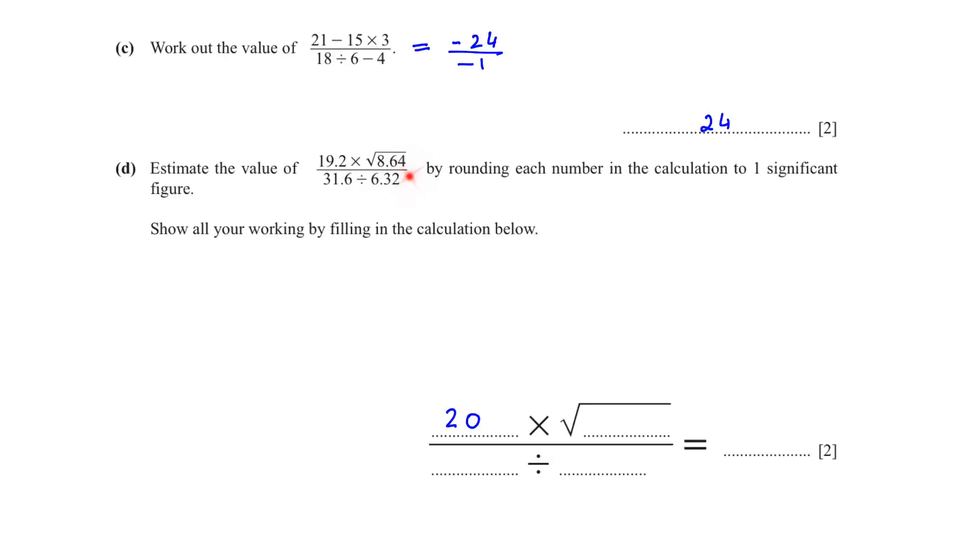Square root 8.64 - if I round this, because 6 is bigger than 5, if you have a number 5 or more than 5 you add 1 to the previous number, so it will become 9. 31 will be 30 and 6.32 will be 6. And when we put this in the calculator we will get 12.